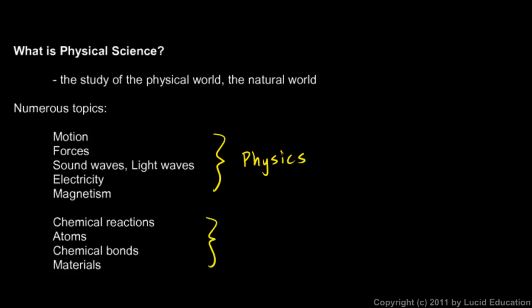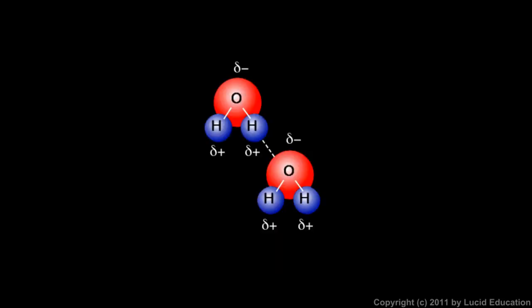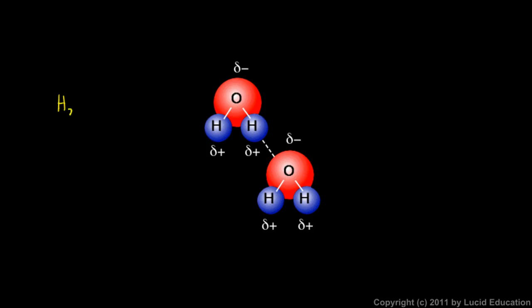We'll also look at a little bit of chemistry. These topics are all part of chemistry — chemical reactions, atoms, chemical bonds, and how atoms bond together to form different materials. Here's an example. This picture shows an oxygen atom and two hydrogen atoms. These symbols mean that the hydrogen atoms are just a little bit more positive than the oxygen atom, while the oxygen atom is a little bit more negative — we're talking about positive and negative electric charge, which we'll cover a little bit in this course. Inside a water molecule — that's what this is — there are two hydrogens and one oxygen, which you've probably heard called H₂O. There are electrons that make up part of these atoms, and the electrons spend a little bit more time near the oxygen atom than near the hydrogens.